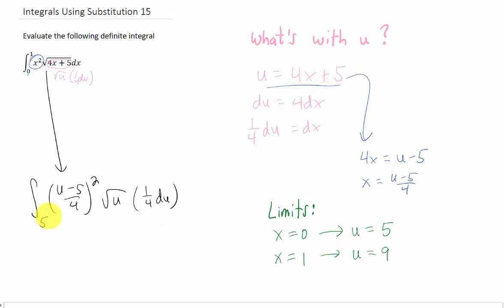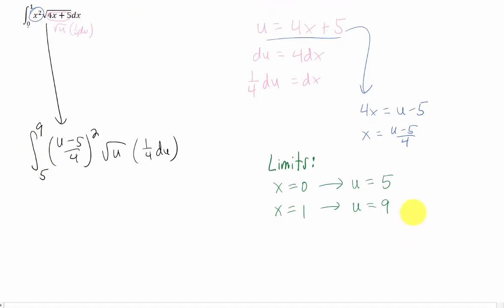So here's the integral now that we have to deal with. Let's go ahead and start that simplification process. If we square our 4 in the denominator, that gives us a 16 in the denominator. That can go with the 1 4th to give us a 1 64th that we can pull out of our integral.